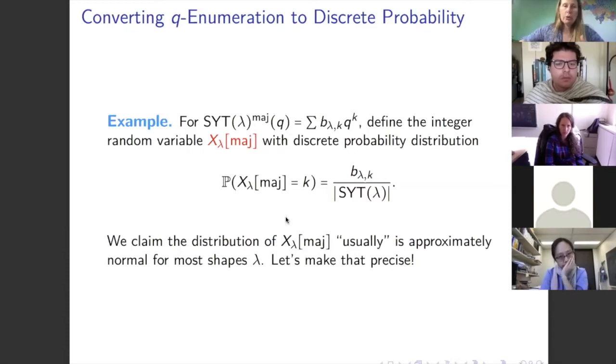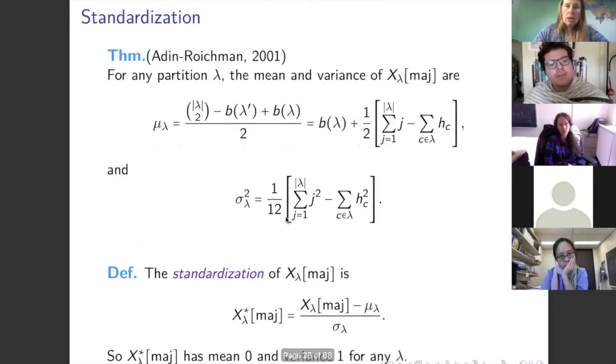For the Q-analog hook length formula, I use the coefficients b(λ,k) divided by the total number of standard Young tableaux of shape λ as the probability that the random variable X_λ^{maj} equals k. The claim from the pictures is that these random variables are usually approximately normal. But what does 'usually approximately' mean, and what does it mean to be a limiting distribution for partitions? There are lots of different ways a partition can go to infinity — first row, size, height, etc. — so we need to be precise.